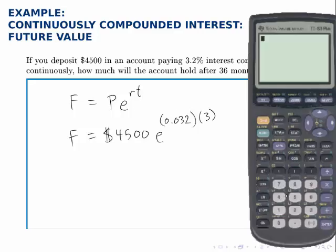So we plug this all into the calculator. 4,500 times—now the e button may be different places on your calculator, but on the TI-83 there's this ln button just to the left of the 4, and the second function on that is e. So you type in second and that button to get e, and notice it pulls up e raised to the power of, and then I type in 0.032 times 3, close the parenthesis, and the account will hold at the end of 3 years, $4,953.42.